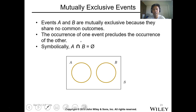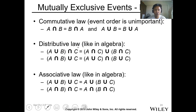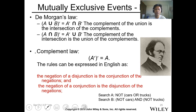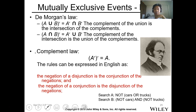For a mutually exclusive event, we symbolically denote that there is no occurrence for both A and B of any element. For mutually exclusive events, we have cumulative, distributive, and associative properties, as well as De Morgan's complement law as tools for some events.